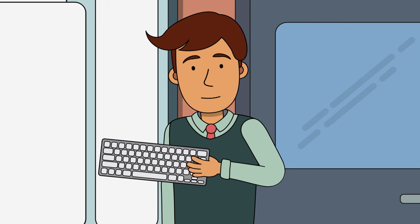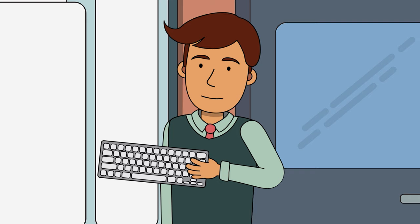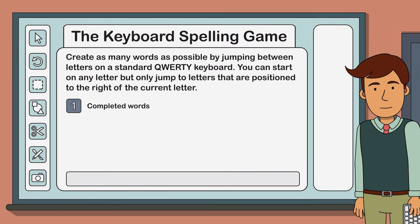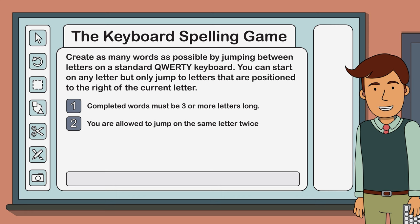That's how to play the keyboard spelling game, but here are a couple of optional house rules to keep things interesting. Number one: completed words must be three or more letters long. Number two: you're allowed to jump on the same letter twice to create double letters, such as in the word bull — B-U-L-L.